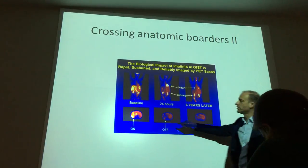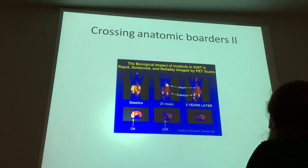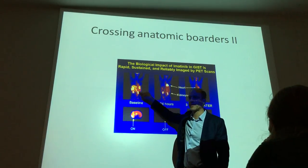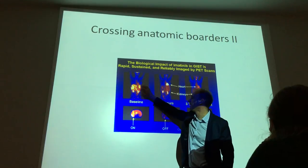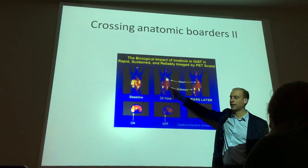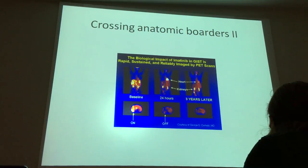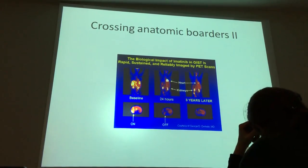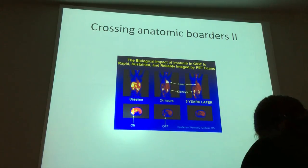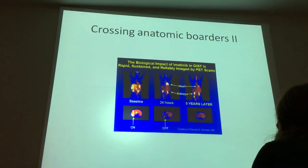It works very rapidly. In a GIST patient shown on a PET scan — where glucose labeled with a radioactive dye lights up wherever the tumor is — you can see all the metastases as yellow areas. After just 24 hours of treatment, the metabolic activity is switched off, like turning off a light. You can do the same scan the very next day and see whether the drug works. The tumor is still there but is no longer metabolically active. And this effect is sustained even after three years — no chemotherapy, just a pill.